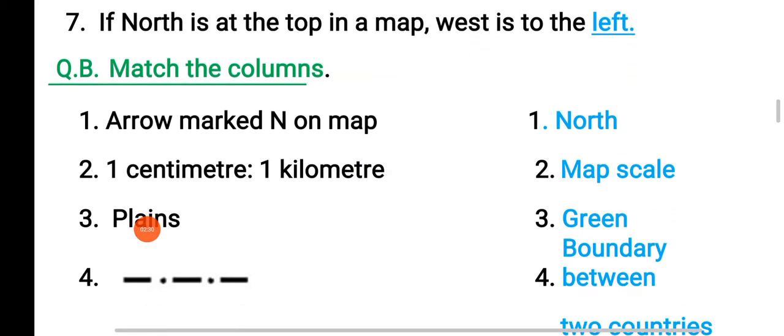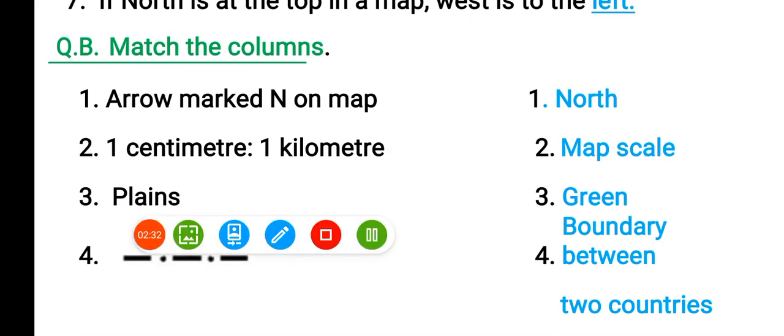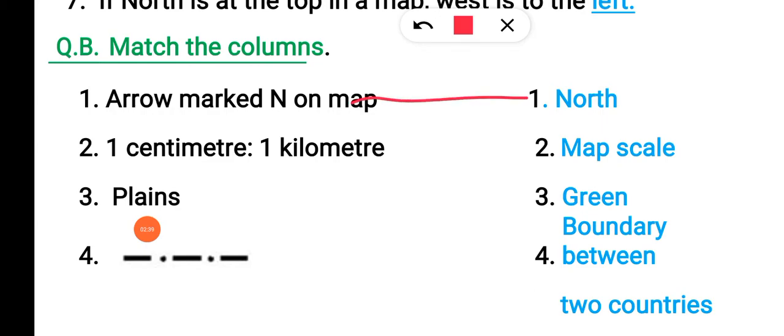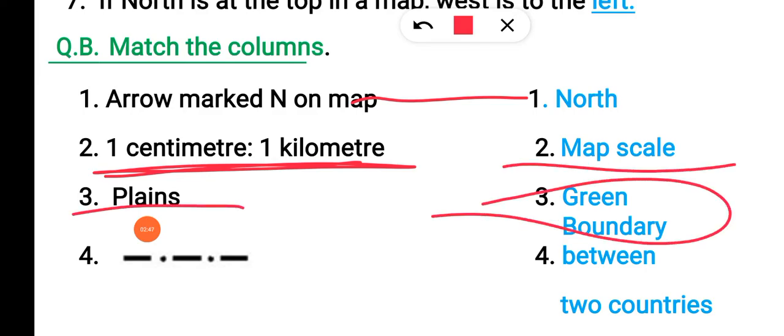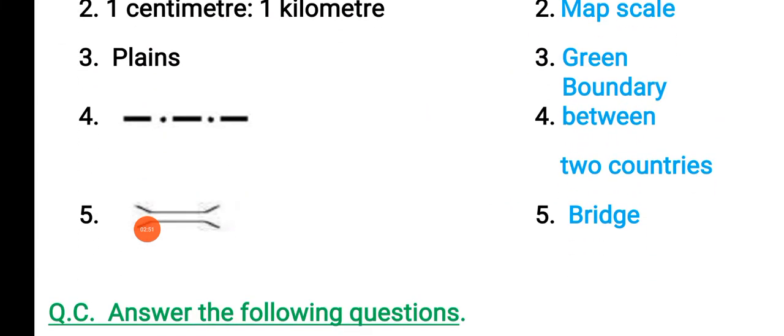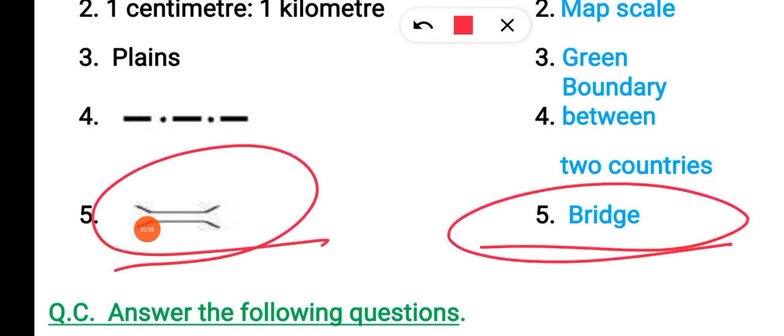Match the column. The arrow marked N on a map is North. One centimeter equals one kilometer is Map Scale. Plains are shown in Green. Boundary between two countries. And this is the sign of a Bridge.